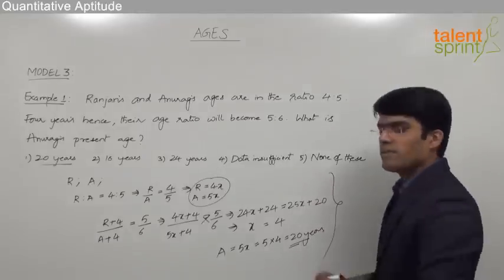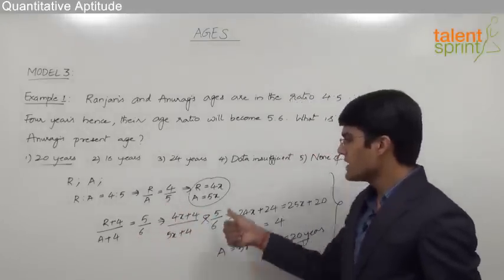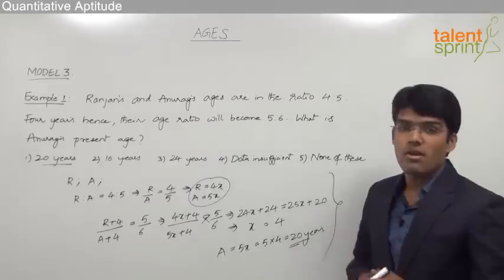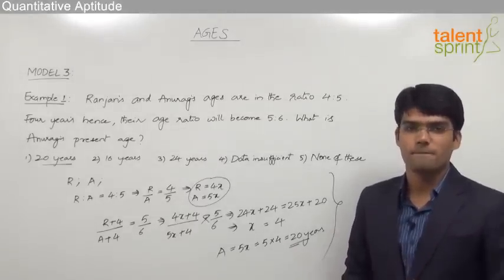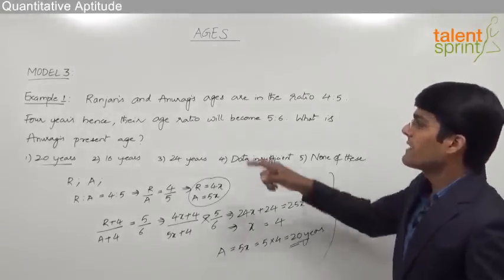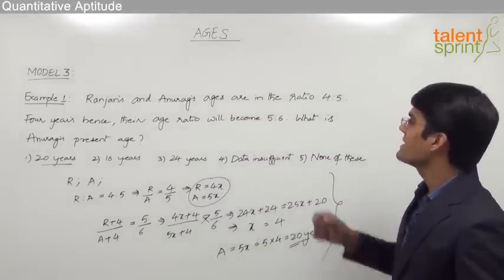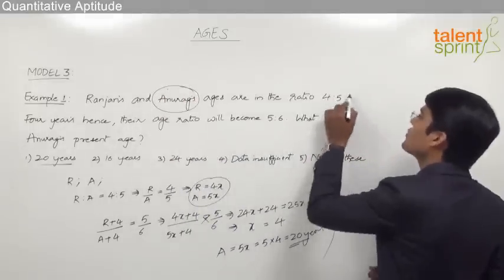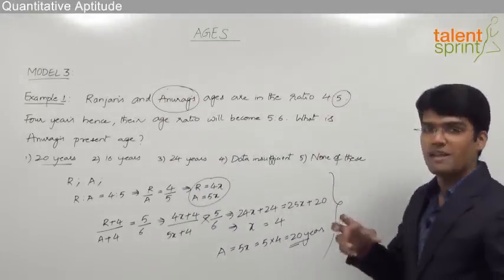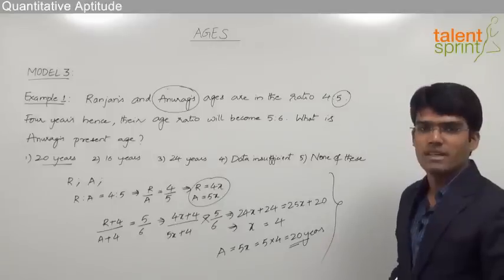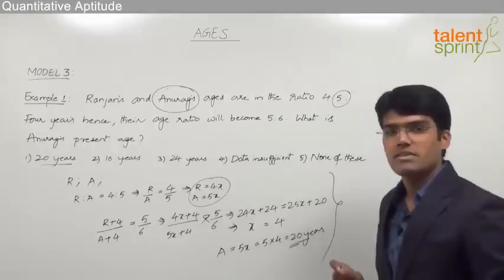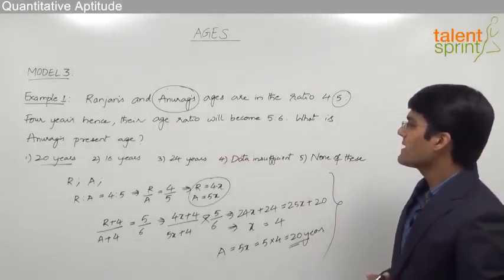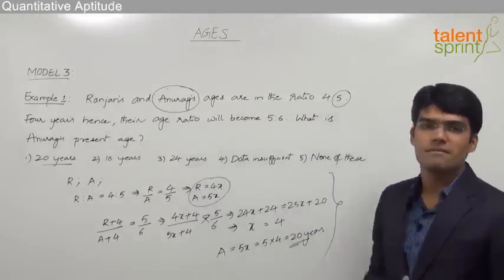Friends, this is the conventional way of solving the problem — writing down the two ratios and solving the equations. But if you try to be smart and eliminate the wrong options, you can get the answer much faster. From the first statement, Ranjan's and Anurag's ages are in the ratio 4 is to 5, so Anurag's present age should be a multiple of 5.